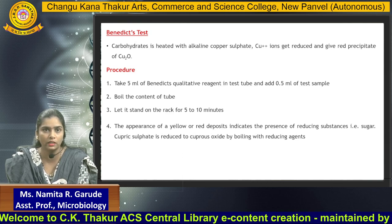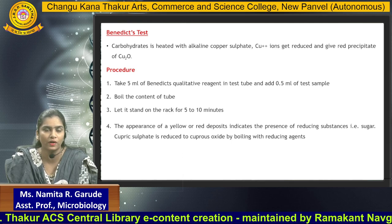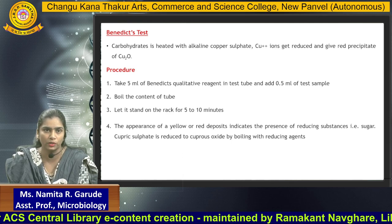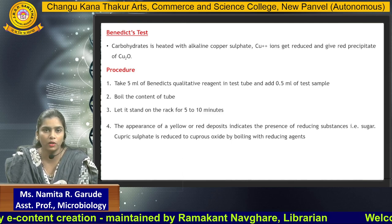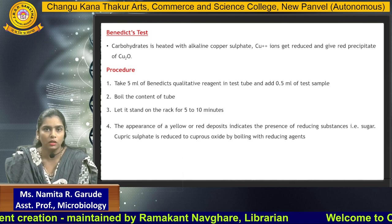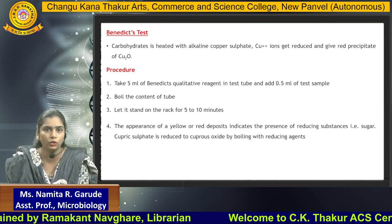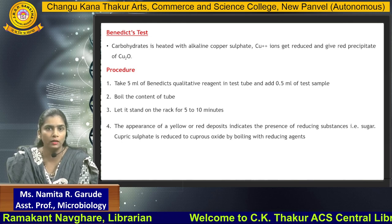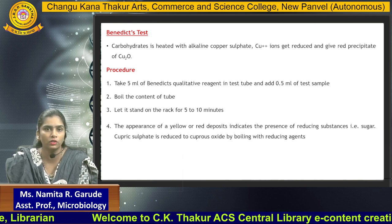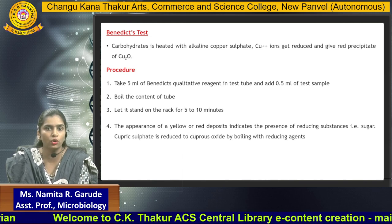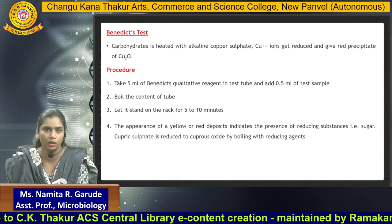This cuprous oxide gives a red precipitate, indicating the presence of carbohydrates in the solution. The procedure for Benedict's test: take 5 ml of Benedict's reagent in a test tube and add 0.5 ml of the test sample. Boil the tube for 5 to 10 minutes, then cool down for 5 to 10 minutes. After cooling, observe the coloration. A yellow or brick-red color indicates the presence of carbohydrates.